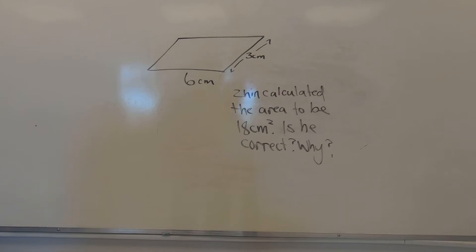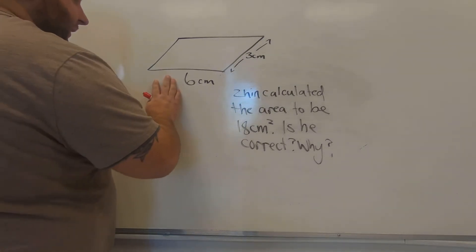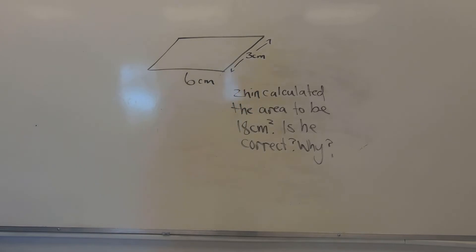And it looks like this. It has a parallelogram with some measurements. We have 6 and 3 centimeters and it says Shin calculated the area to be 18 centimeters squared. Is he correct? Why?